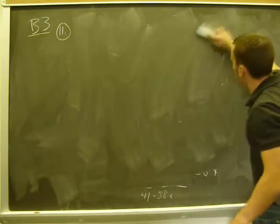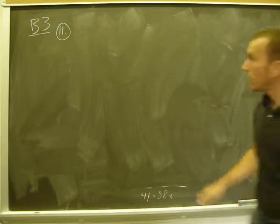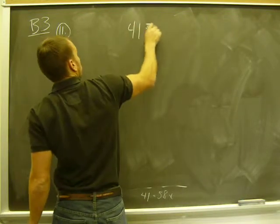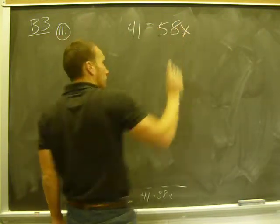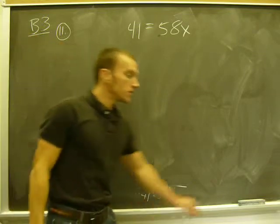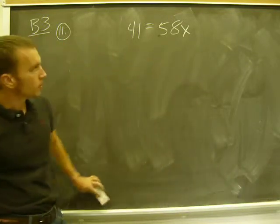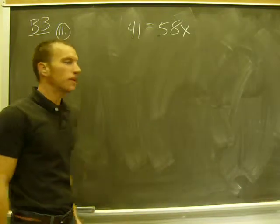So now I have one step from my answer. 41 equals 58x. I'm going to rewrite that. And now solve that. One step from my solution. All I have to do is divide by the coefficient of x. That's my last step.